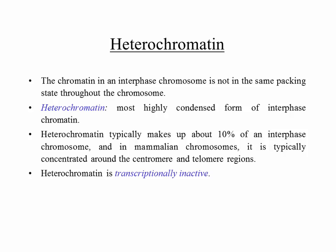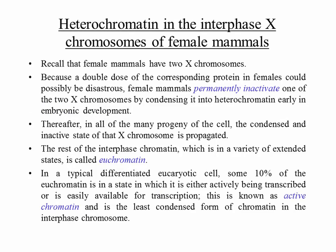A good example of heterochromatin is the interphase X chromosomes of female mammals. Females have two X chromosomes, and a double dose of the corresponding proteins would be lethal, so one of the X chromosomes is switched off — condensed into heterochromatin — early in embryonic development. Either the paternal or maternal copy is switched off, and in the progeny of that cell, whichever copy was switched off stays switched off.